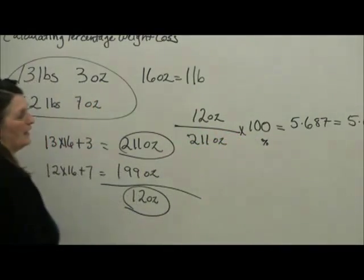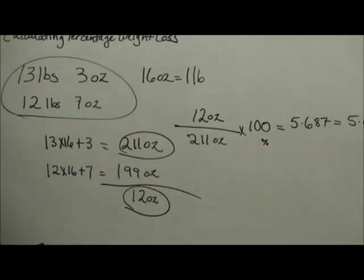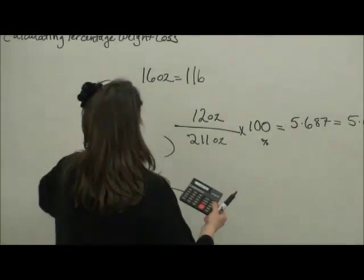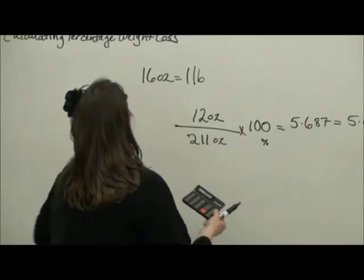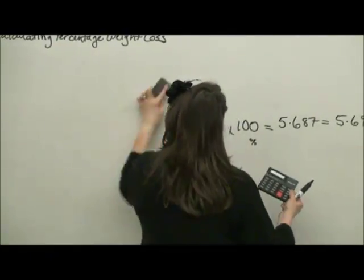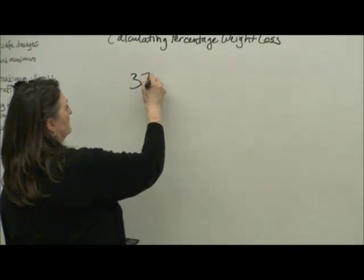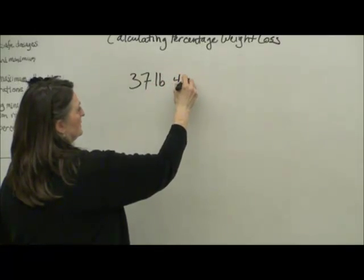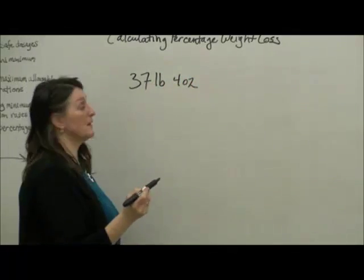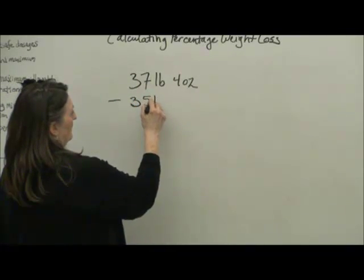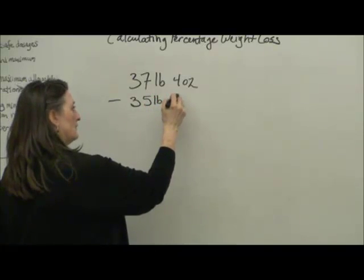Let's do one more example. We have a child who did weigh 37 pounds 4 ounces, and now they come to the hospital and they weigh in at 35 pounds 13 ounces.